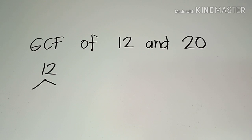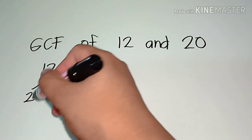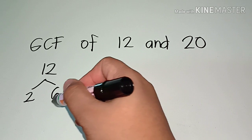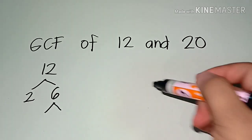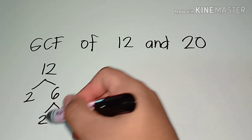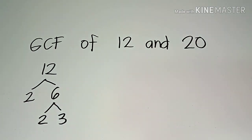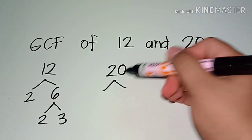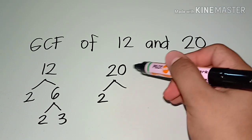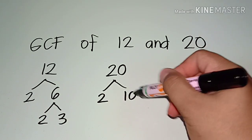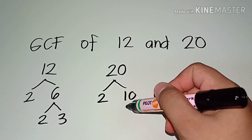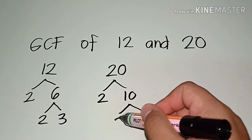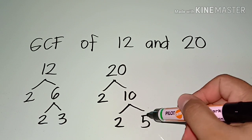We know that 12 is an even number so we can divide it by 2. 12 divided by 2 is 6, and we can still look for the prime factors of 6, which is 2 and 3. And for 20, we know that it's also an even number so we can divide it by 2, giving us 10. We then look for the prime factors of 10, which is 2 and 5.